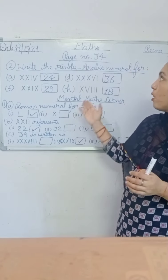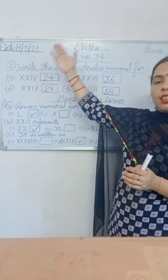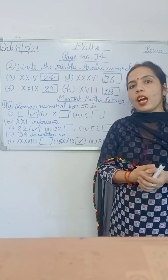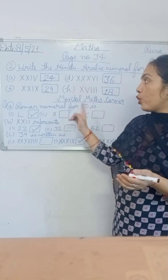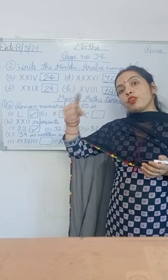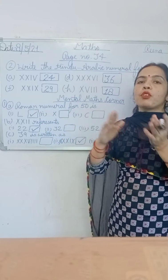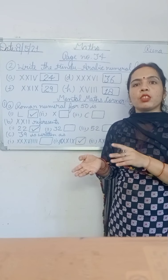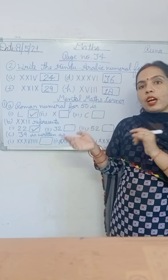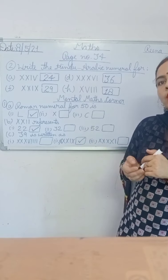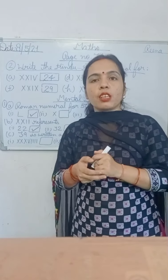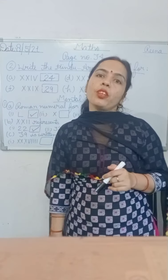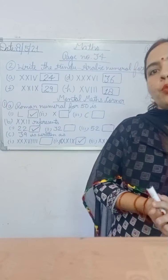Now solve your page number 34. First write the date, then classwork, and start your work with neat and clean handwriting. Learn Roman numbers from 1 to 50 and 50 to 100. After 50, you repeat just like the earlier pattern — and 100 is written as C, and 1000 is written as M. Thank you.